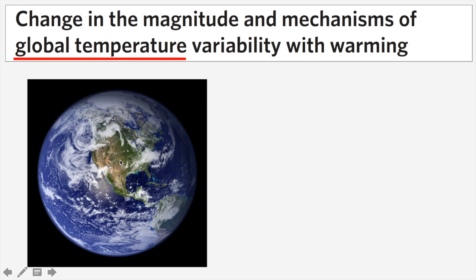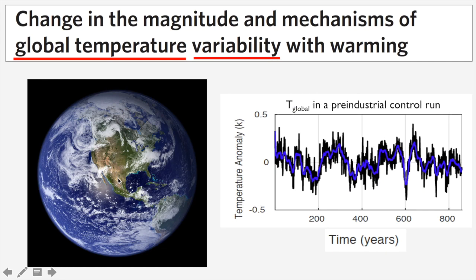We're looking at air temperature measured two meters above the surface, averaged over the entire surface of the planet — specifically unforced global temperature variability. That's the type of variability exemplified by pre-industrial control runs in global climate models.